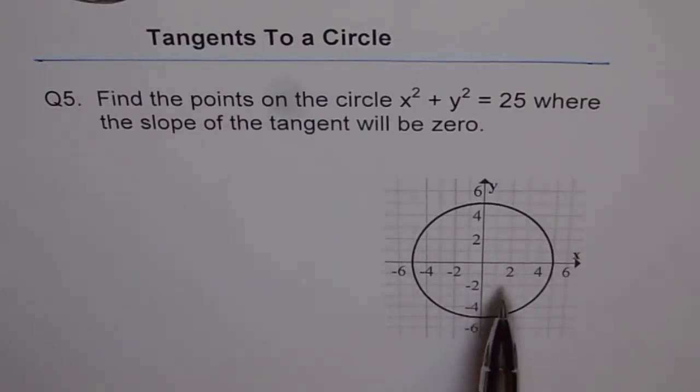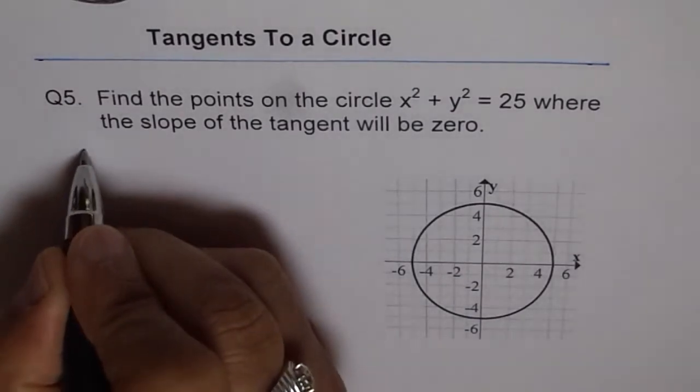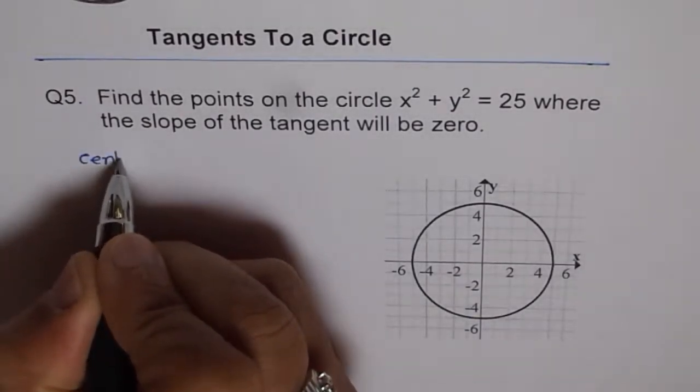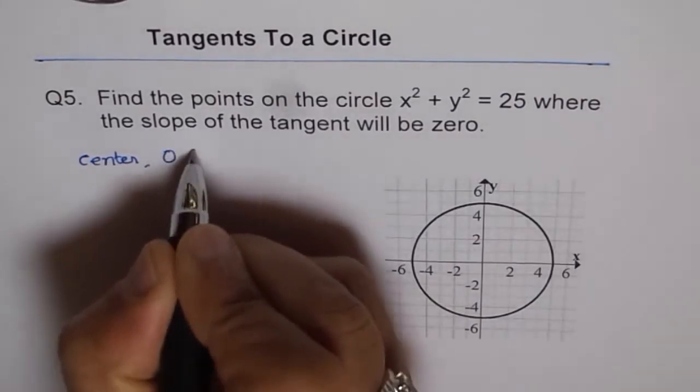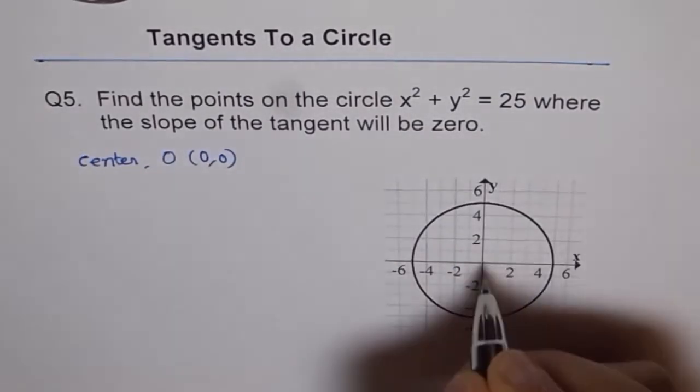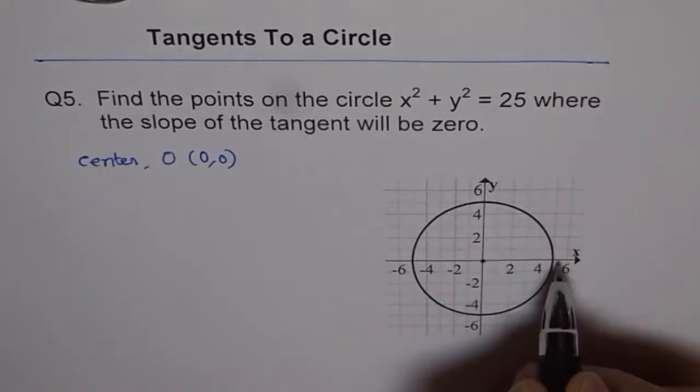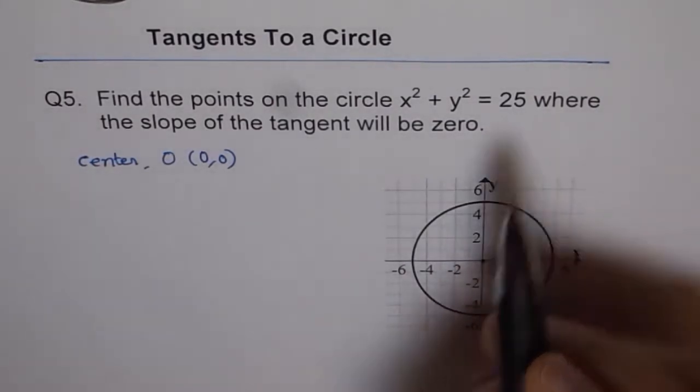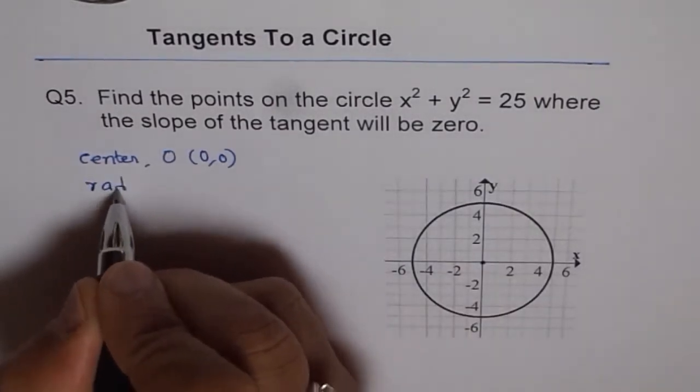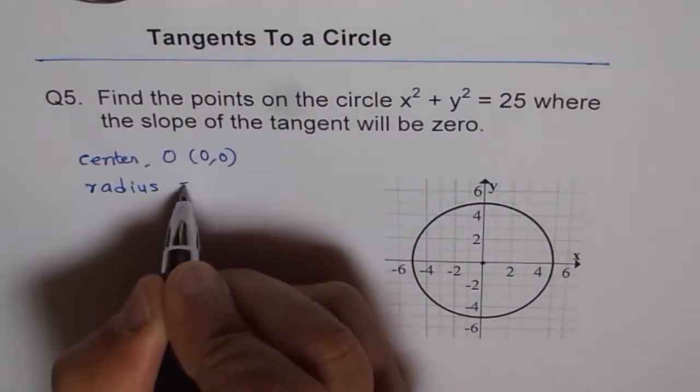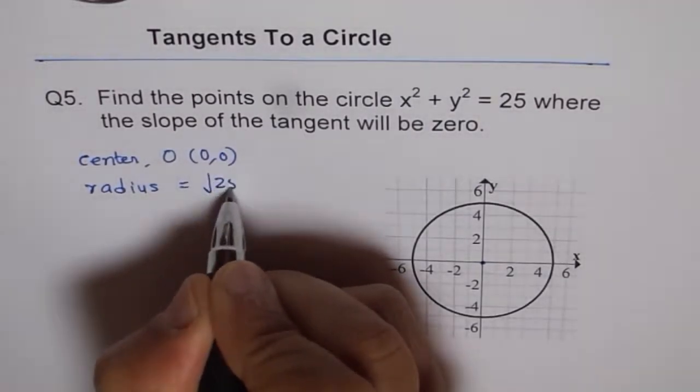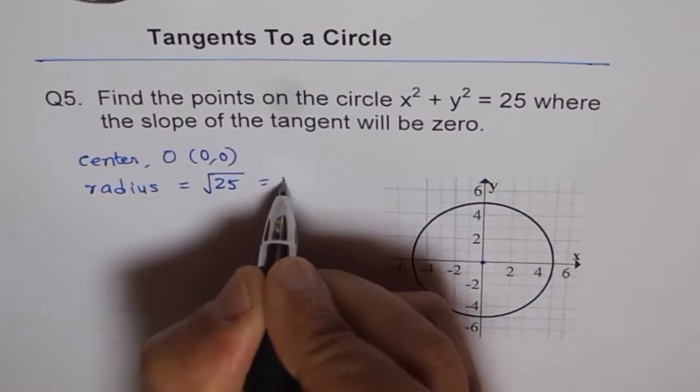So what I have done here is drawn a circle for you. This circle has a center at origin O which is 0, 0. That is the center for the circle. And the radius of the circle is square root of 25, so we have radius equals to square root of 25 which is 5.